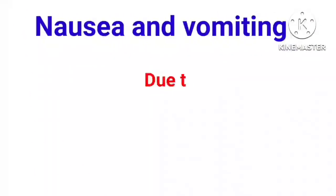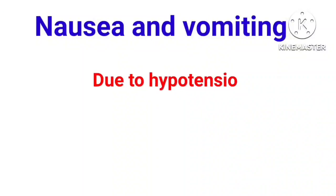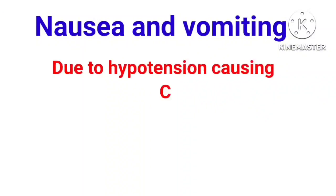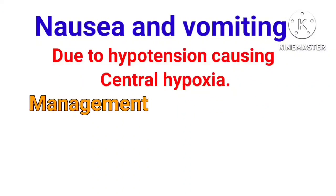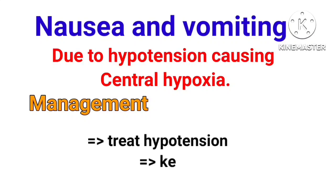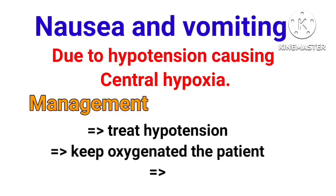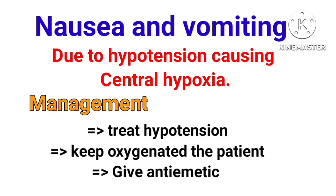Nausea and vomiting occur due to hypotension causing central hypoxia. Management: treat the hypotension, keep the patient oxygenated, and give anti-emetics.